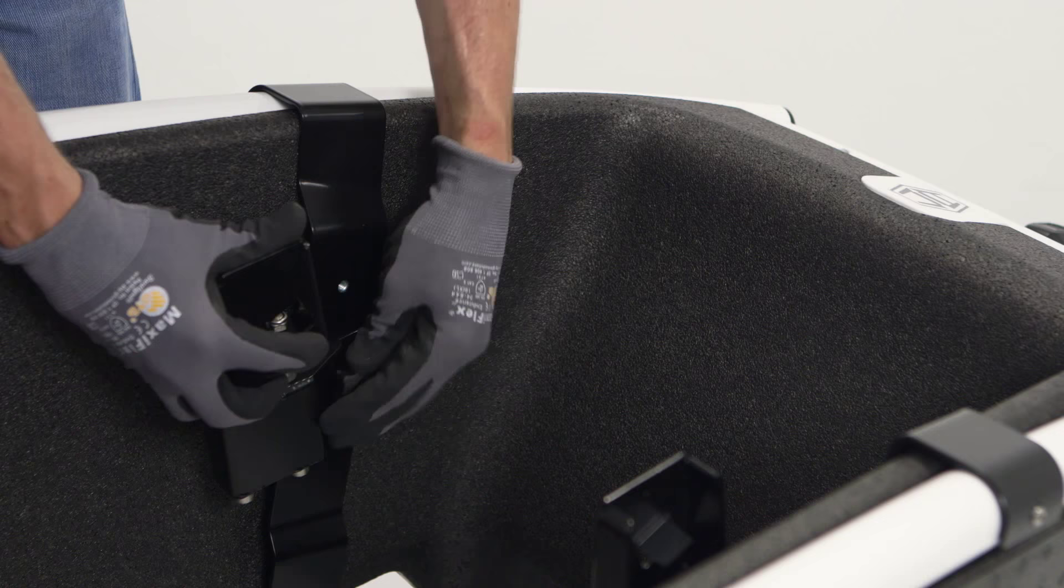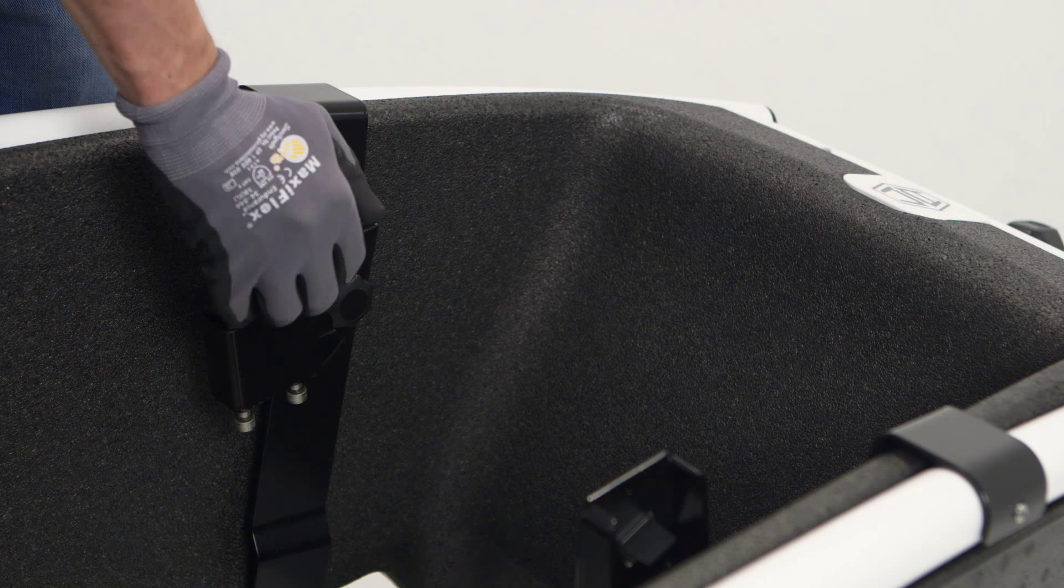The Maxi-Cosi adapter has two separate mounting heights. Unscrew the large knob, choose the preferred height, and lock it in.